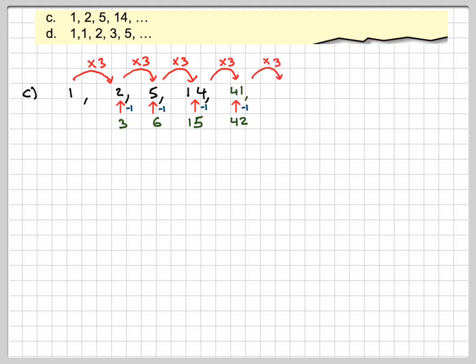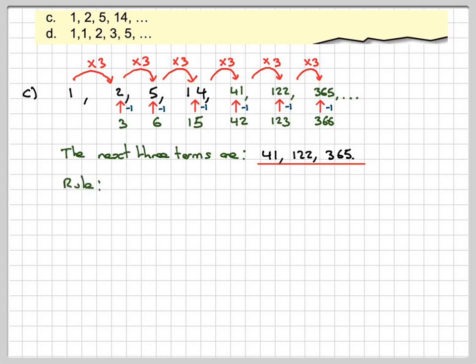So continuing that pattern, 14 times 3 gives me 42. Take away 1, it's going to give me 41. 41 times 3 gives me 123. Take 1 from that, it's going to give me 122. And then multiply 122 by 3 gives me 366, and take away 1, it gives me 365. And it's going to continue. So the next three terms are 41, 122, 365. So it's a little bit more difficult, that one. This one has actually two operations to get from one term to the next. So the rule is going to be multiply the previous term by 3 and then subtract 1.